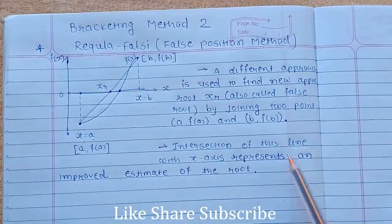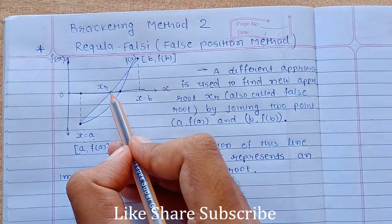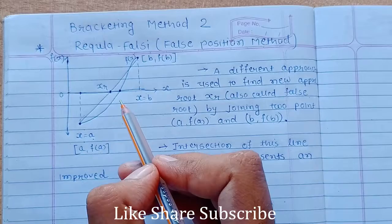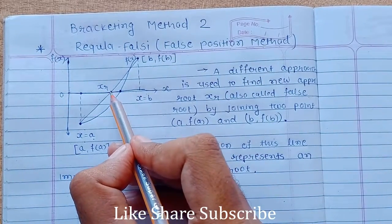this straight line with x-axis represents improved estimate of the root. So this is our improved estimate xr. So at the end of the first iteration we will find this root xr.